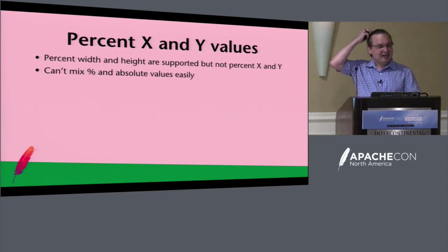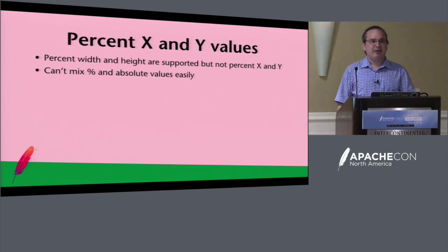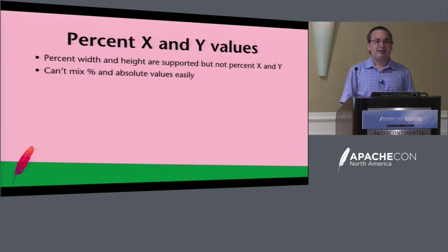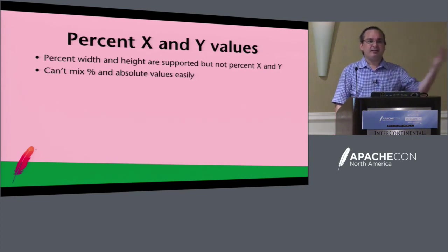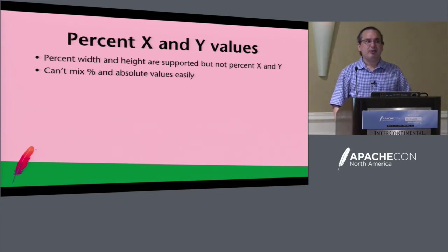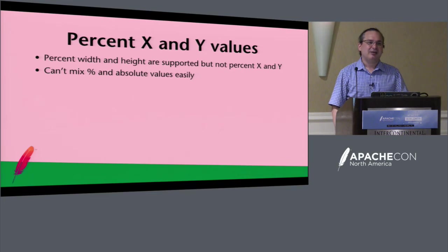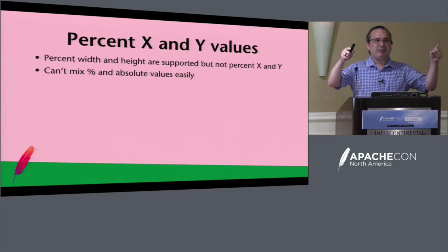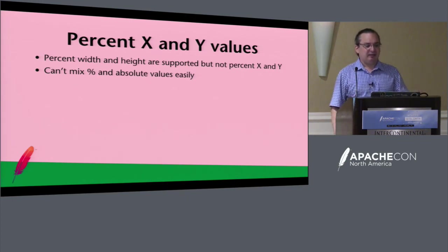Percentage X and Y values are not supported. You have percentage width and percentage height, but not percentage X and Y. You also can't mix percentages and absolute values together, which is often what you want — for example, a 20px padding on each side with the rest filling the browser. If you say 100% width in FlexJS with those paddings, you get ugly scrollbars because it adds up to 100% of the browser width plus 40 pixels. We really need a constrained layout to solve this problem.